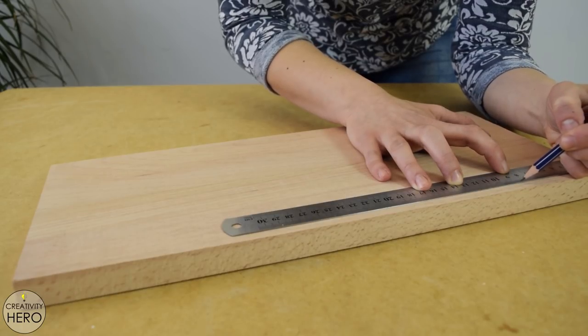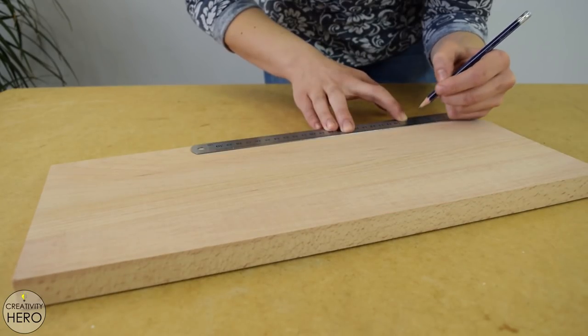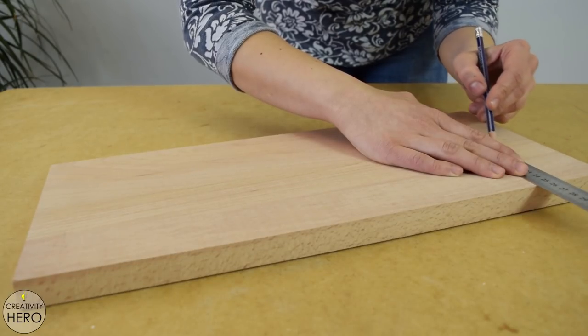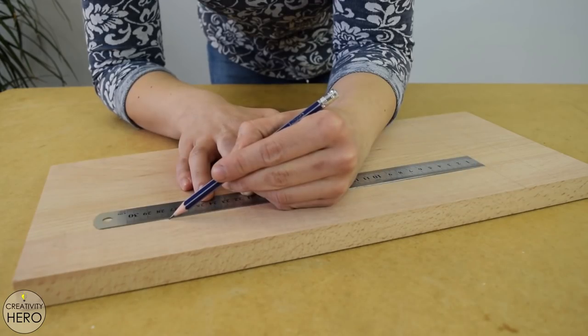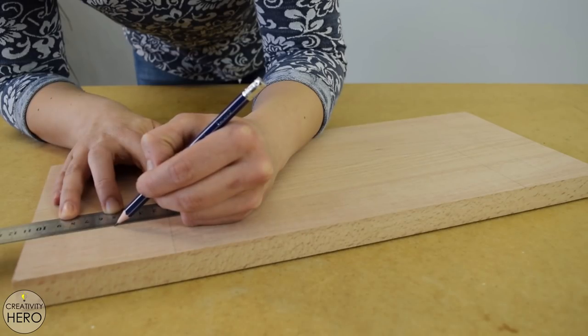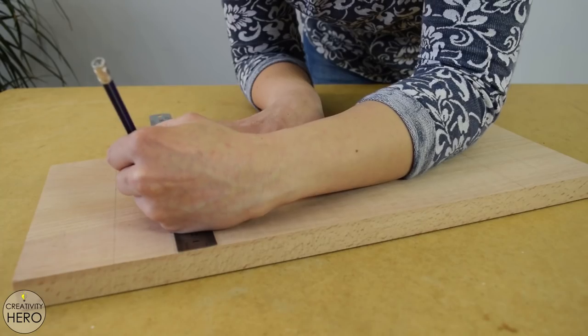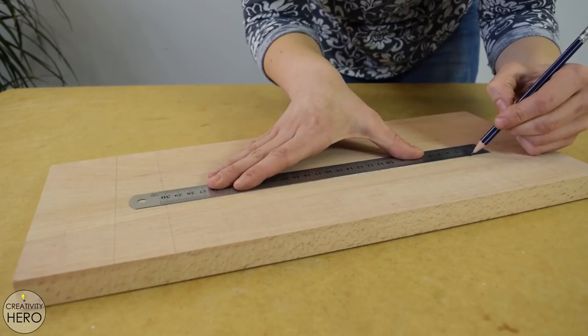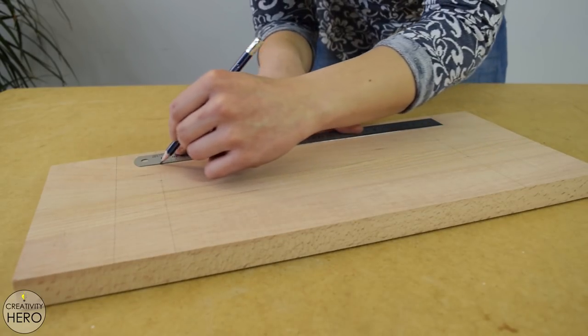This means that it's time to make the wooden base for which I chose beech wood. In order to be able to make all the cuts I need to mark all the dimensions. You can find all the dimensions down in the description box. There you can also find links to the tools and the materials that I'm using in this project. Also I want to remind you to subscribe to my channel if you haven't already.